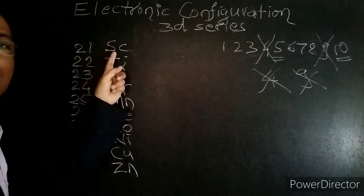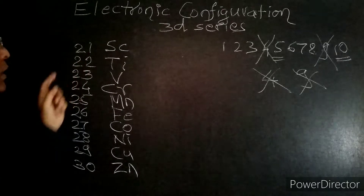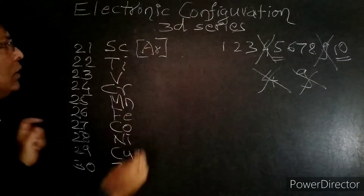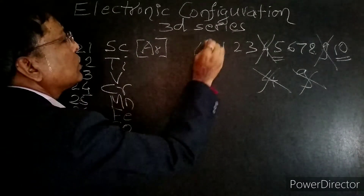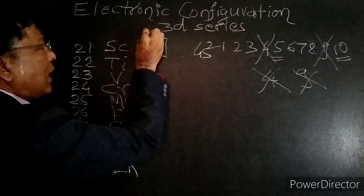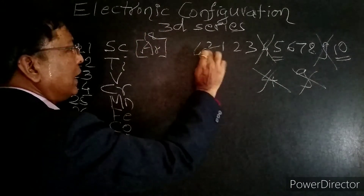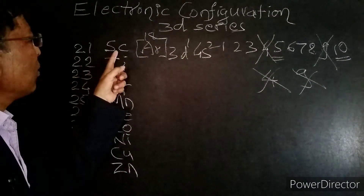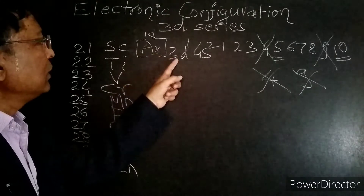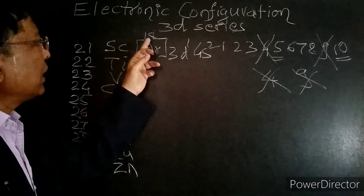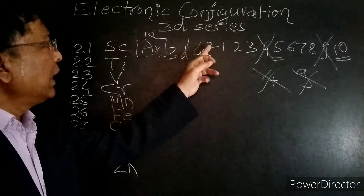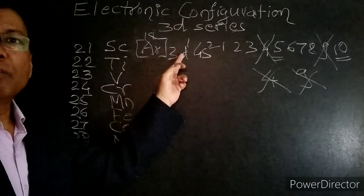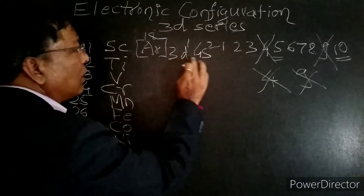Let us see the electronic configuration of Scandium, atomic number 21. The electronic configuration is Argon (18) plus 4s2, giving 20 electrons, and then 3d1, totaling 21. So the electronic configuration of Scandium is: [Ar] 3d1 4s2.